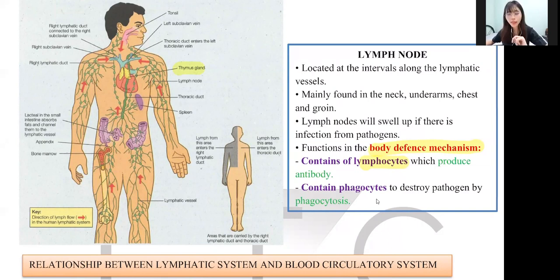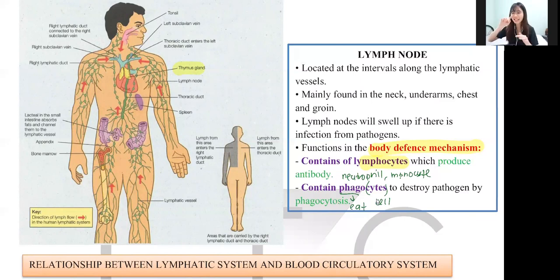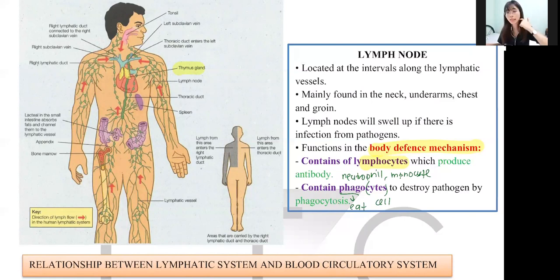Lymph nodes also contain phagocytes — another type of white blood cell. Examples include neutrophils and monocytes. 'Phago' means eat, 'cyte' means cell, so phagocytes are cells that eat. They destroy pathogens — harmful microorganisms — through a process called phagocytosis, which is an eating process.